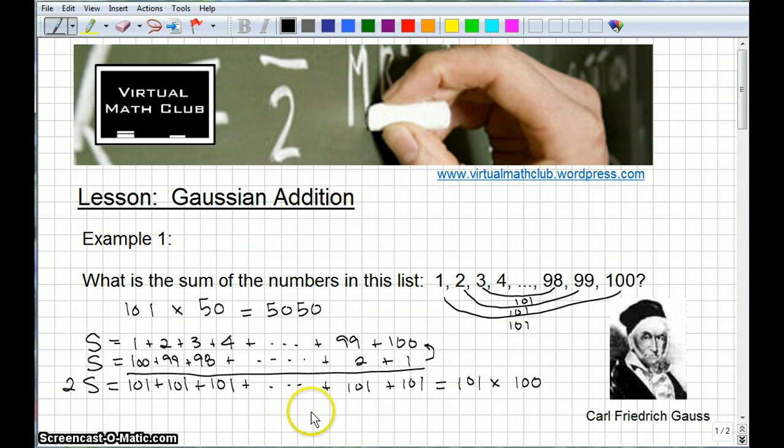But, that's 2S. And if we want to know the sum of one of these S's, we just divide both sides by 2, so S is equal to 101 times 100 all over 2. Which is, we could just divide the 2 into the 100 and we would get 101 times 50 just like we got up here. So, we're going to get the same answer, which is a good thing. 5050. That's just another way to look at it.